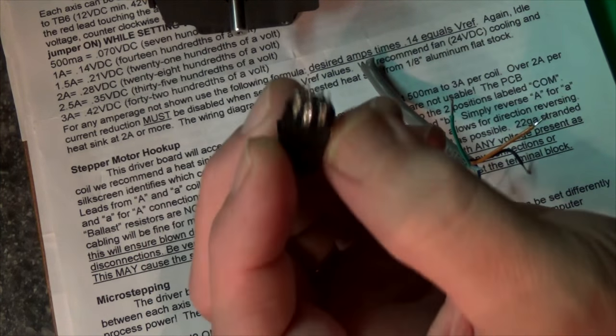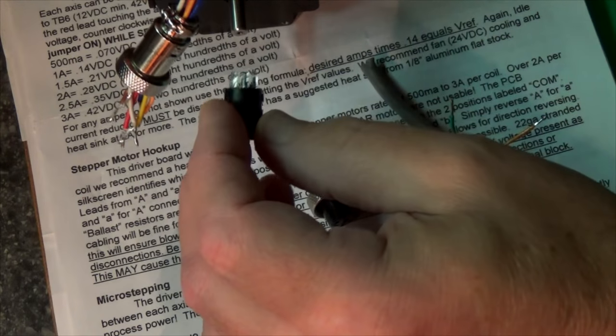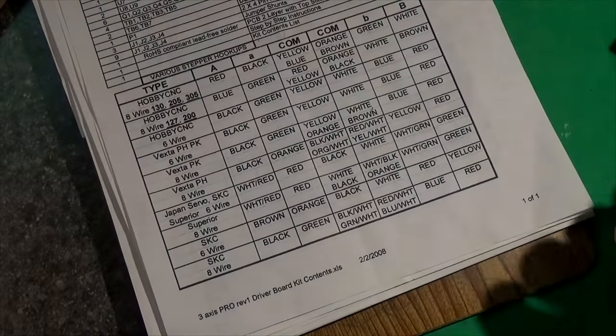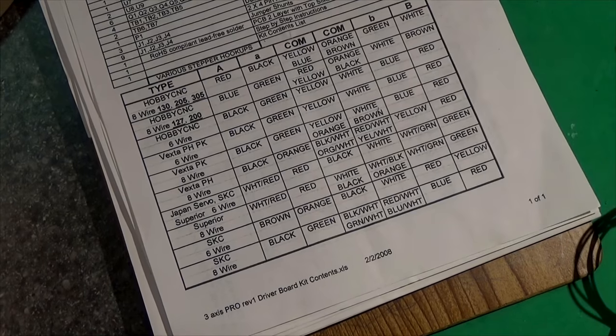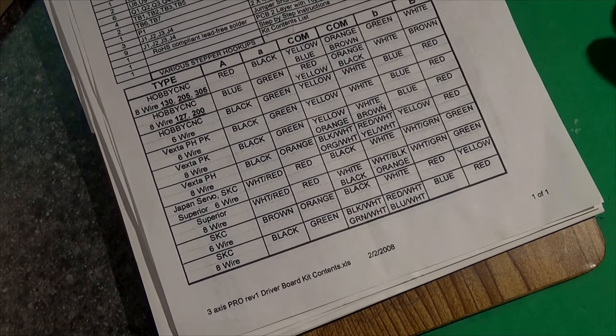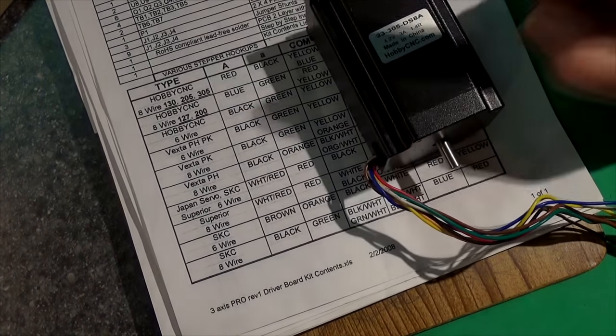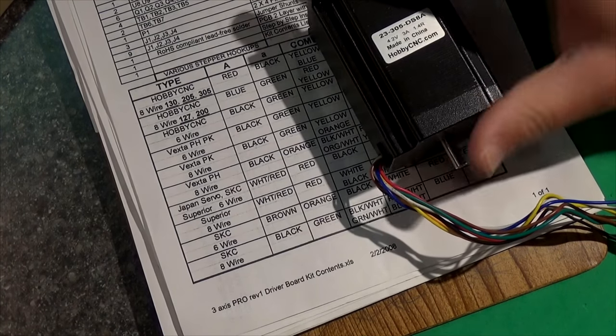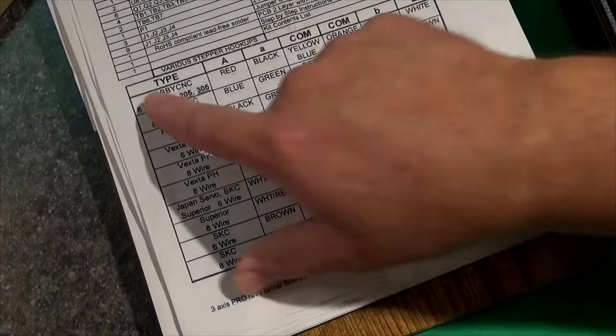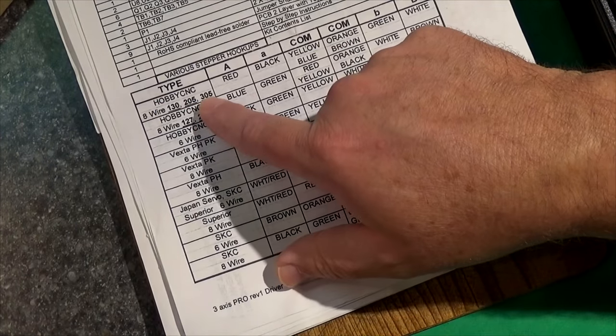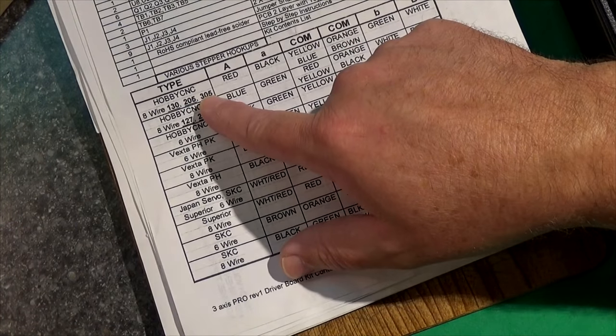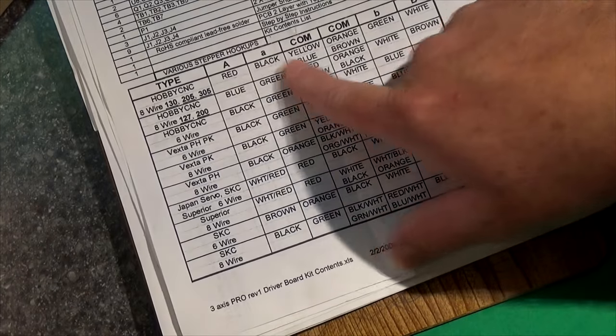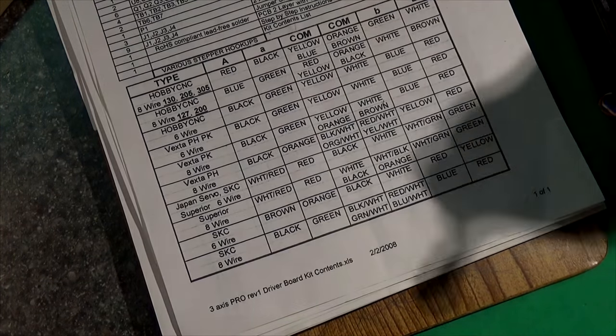We haven't even hooked it to the computer. So we got to do that. The question is, how do you wire this up? You have to get your documentation for your motor. This is the HobbyCNC motor. It's a 305. And here is the paperwork for it. The 305, it also includes these two models. It tells me the color of the wire and then its connection.